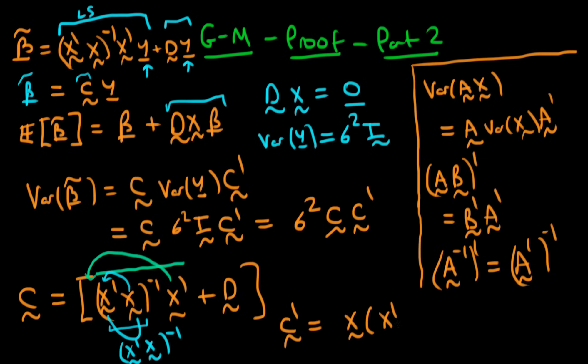So C transposed equals X(X'X)⁻¹ plus d transpose. We're now part of the way to finding the variance of beta tilde. In the next video we'll go ahead and find the variance of beta tilde and compare it with what we got from least squares.